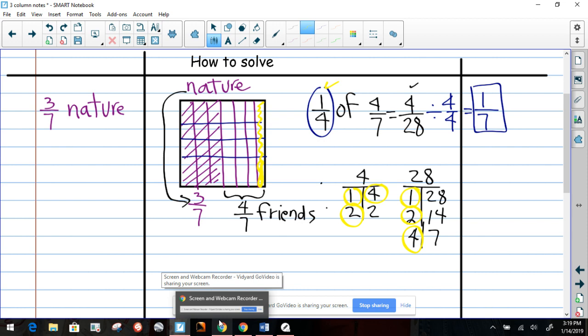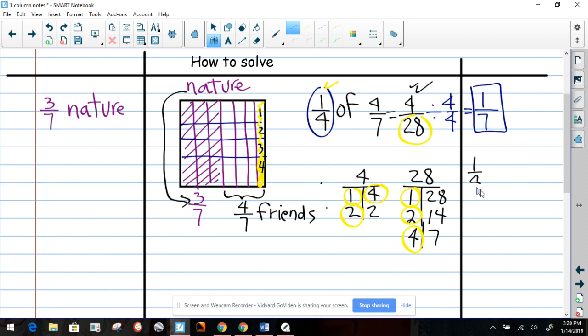Okay? So, then, your answer will be, out of this whole, the whole area, we have 28 of them. If you count them all, that's 28. And where they overlap right here, it will be four of them. One, two, three, four. Let me use a different color. This will be one, two, three, four. That's where the four comes from. So, that was 4/28. And then, we simplified it. So, now we know that one-fourth of the four-sevenths friends is one-seventh.